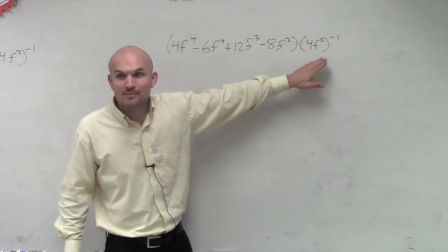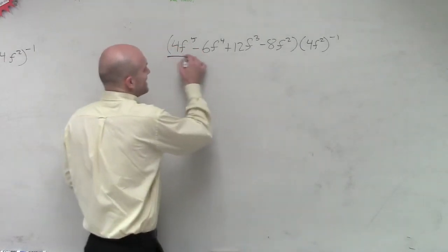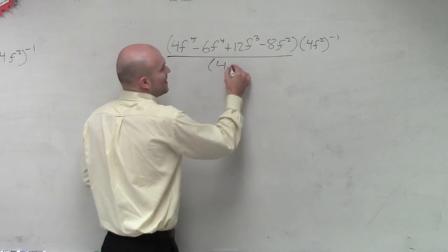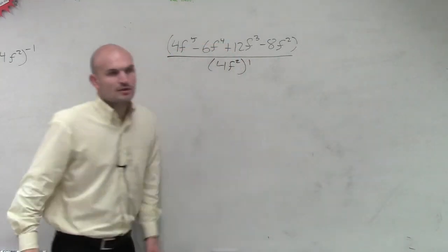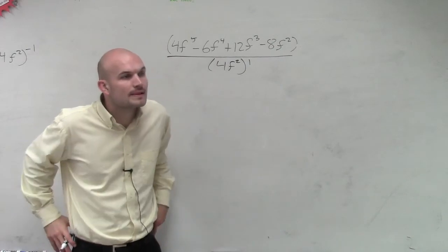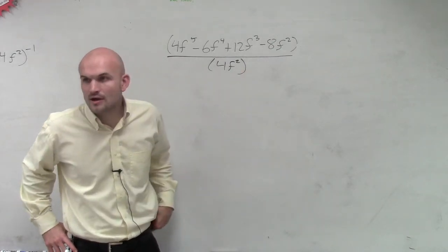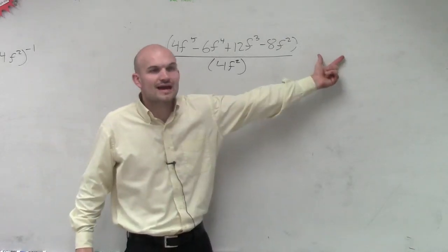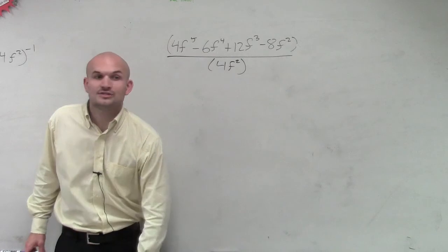Now remember, anything raised to a negative exponent, we can easily write that in the denominator as a positive exponent. Right? So you don't need to write that. Does everybody see what I did? When you're multiplying by something to the negative exponent, you can rewrite it now in your denominator.